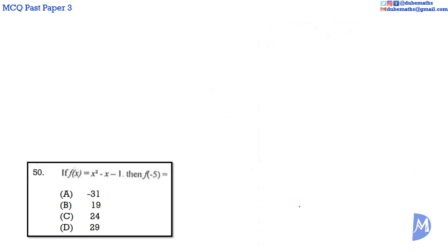Question 50. f of x equals x squared minus x minus 1. f of negative 5 is thus negative 5 squared minus negative 5 minus 1.